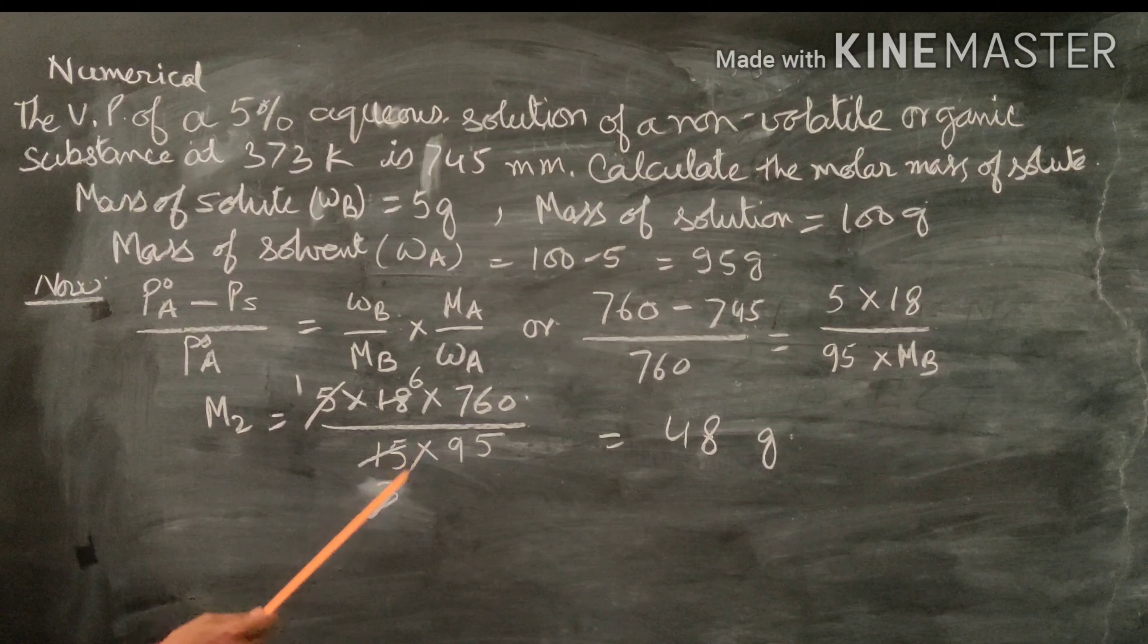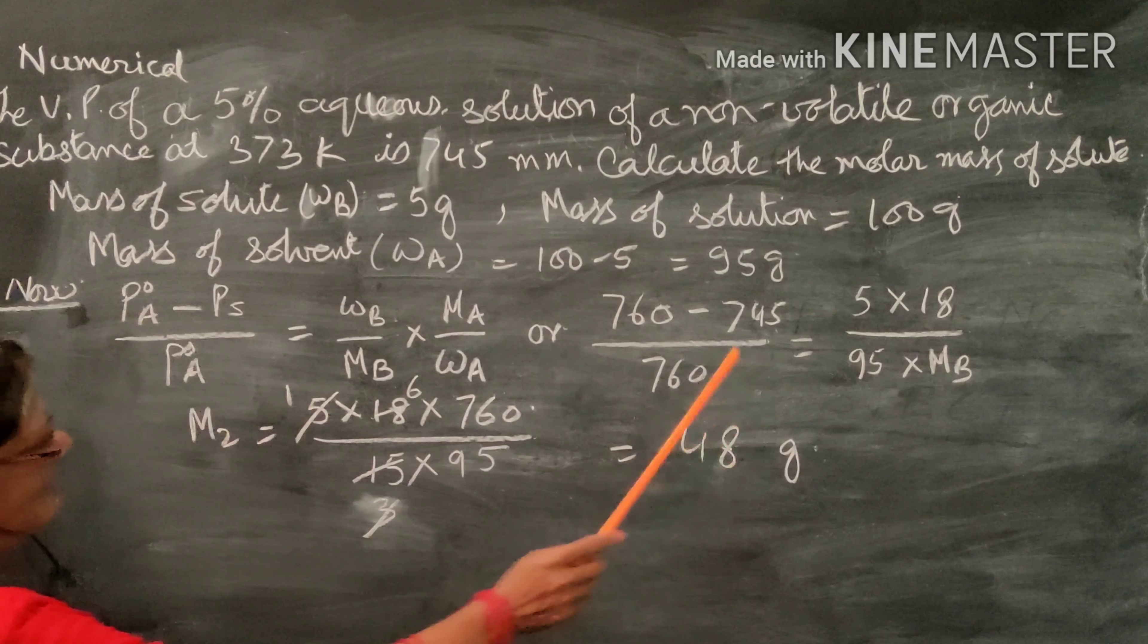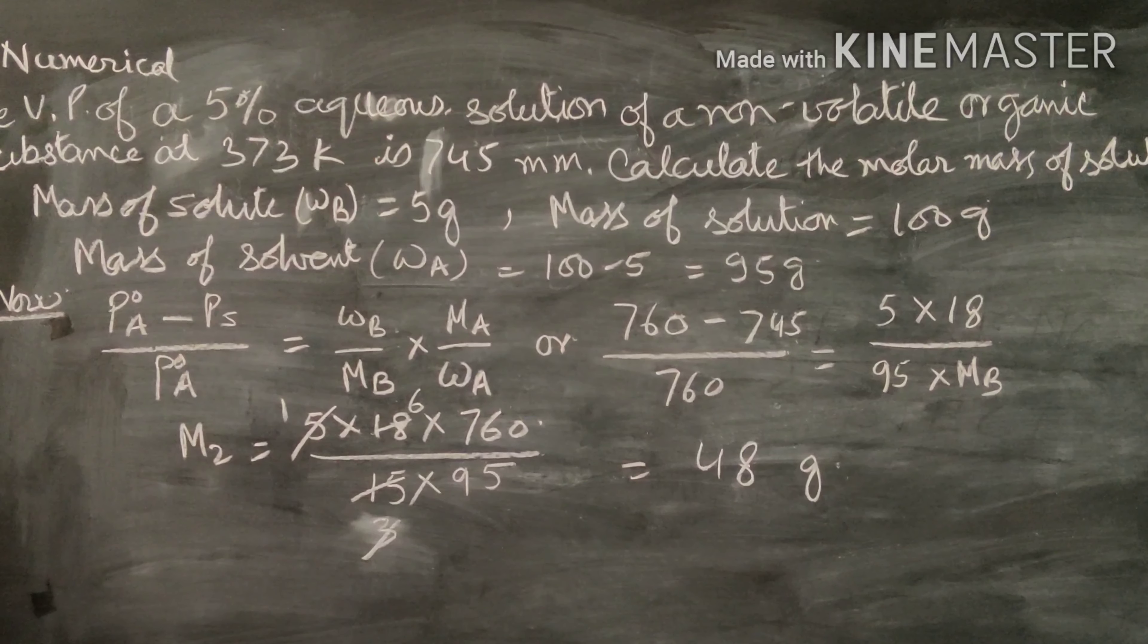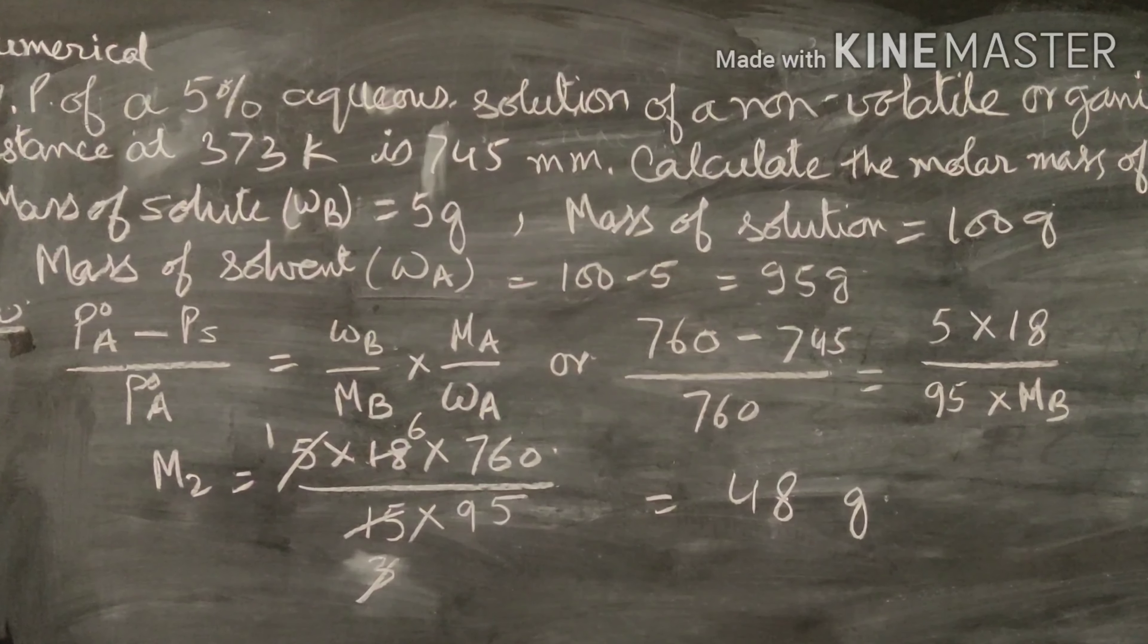When you calculate this after simplification, Mb will equal 48 grams. That will be the molar mass of the solute.